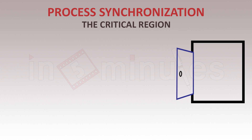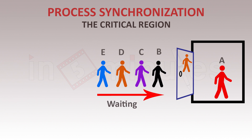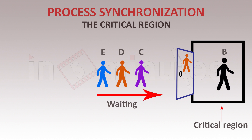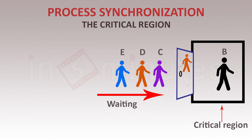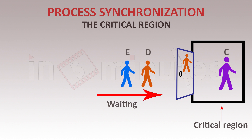Consider a room — maybe a restroom — with a queue of N people standing outside. The room can be used only by one person at a time. Label them A, B, C, D, and E. Assuming A has already gained access, others are waiting. A is within the critical region. When A finishes its job, it comes out, and from the waiting queue — depending on some algorithm — B enters. C, D, and E await. When B finishes, it exits and C gets in, and so the system repeats.